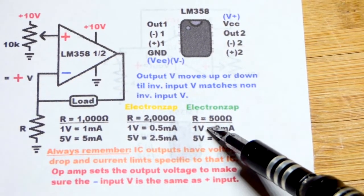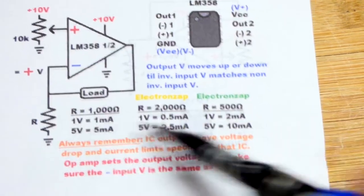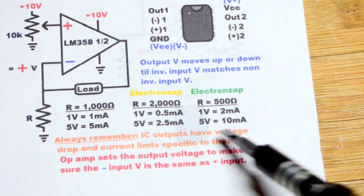500 ohms would have been half of the resistance, so we would have got twice the current for a given voltage. 2 milliamps for 1 volt and 10 milliamps for 5 volts.